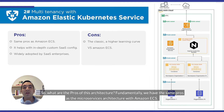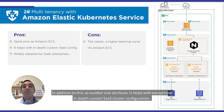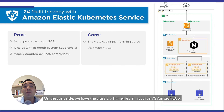What are the pros of this architecture? Fundamentally, we have the same pros as the microservice architecture with Amazon ECS. In addition, number one, it helps with exceptional in-depth custom SaaS cluster configuration. And number two, it is widely adopted by enterprise SaaS companies. On the cons side, we have the classic: a higher learning curve versus Amazon ECS.